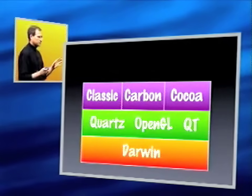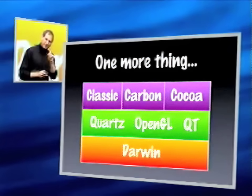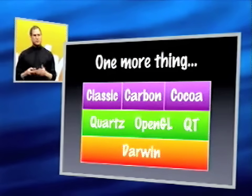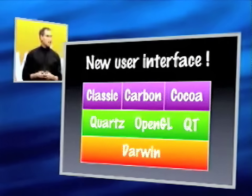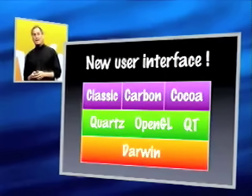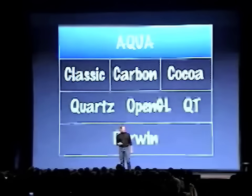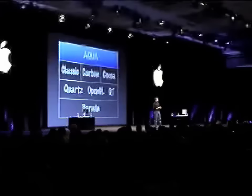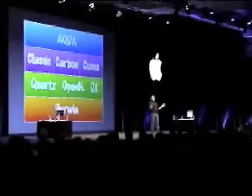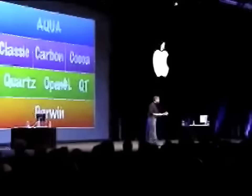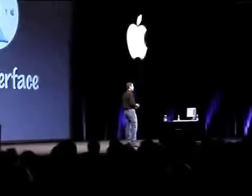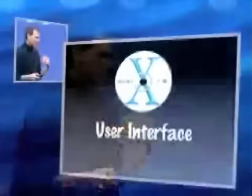Except there's one more thing. The one more thing is we have been secretly, for the last 18 months, designing a completely new user interface. That new user interface builds on Apple's legacy and carries it into the next century. We call that new user interface Aqua, because it's liquid. One of the design goals was that when you saw it, you wanted to lick it. And we are incredibly, incredibly excited and pleased with how this has turned out.